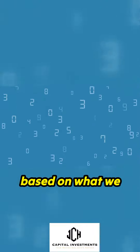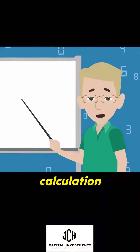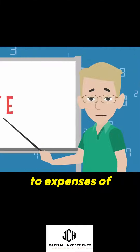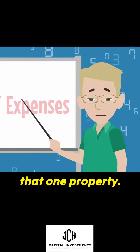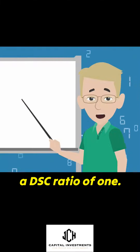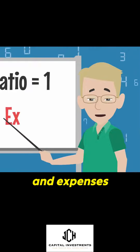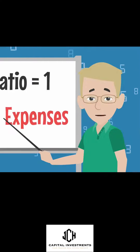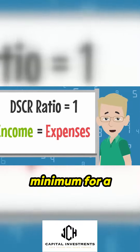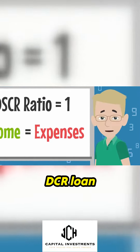DSCR loans are based on what we call a DSCR ratio. It's a simple calculation comparing income to expenses of that one property. In simple terms, a DSCR ratio of one means the income and expenses equal each other — the break-even point. And this is the minimum for a good rate on a DSCR loan.